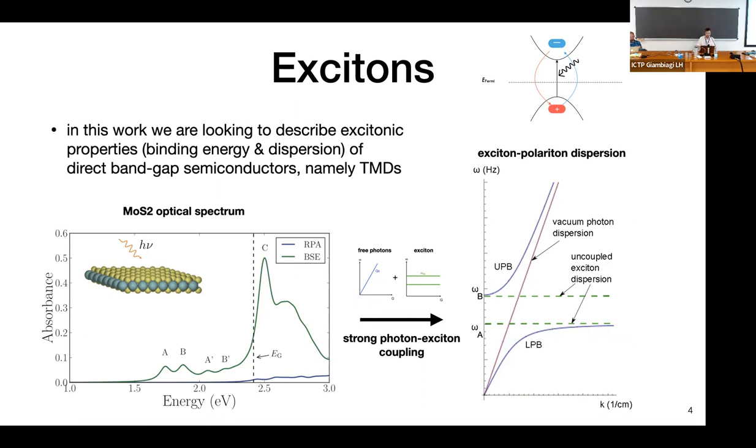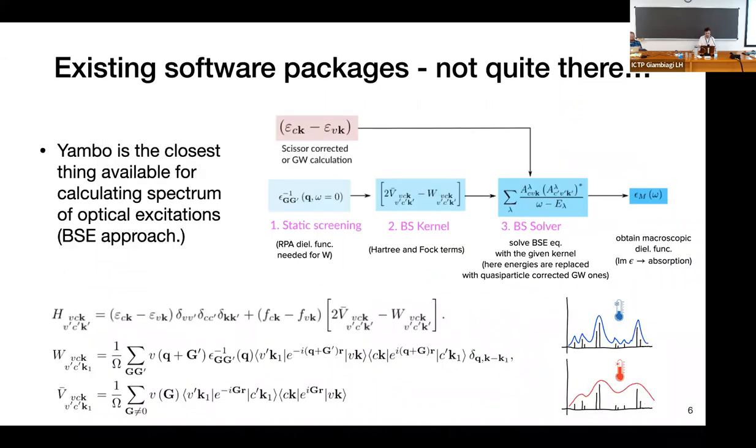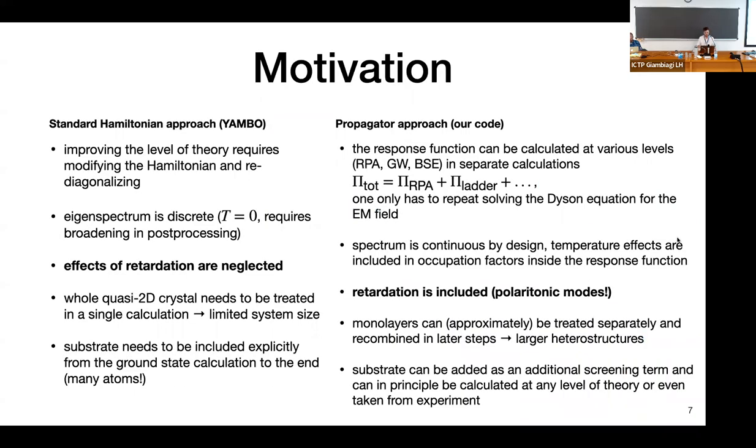So this is the thing that we are trying to address and do a propagator approach to calculating these properties. In the first part, to calculate the optical spectrum, usually in packages like Yambo people calculate a static screening, they construct a BSE kernel and then they diagonalize the two-particle Hamiltonian and eventually obtain the final dielectric function. But there are certain limitations to this approach. You have to solve the whole Hamiltonian and re-diagonalize it each time that you want to change some little thing with it. You don't really have the flexibility to separate different contributions like RPA or ladder contributions. The Hamiltonian method is also an eigenvalue problem, you get a discrete eigen-spectrum, it's a zero temperature model which requires some post-processing, and the biggest deal breaker is that you cannot directly describe the polaritonic modes because the photon retardation effects are neglected.